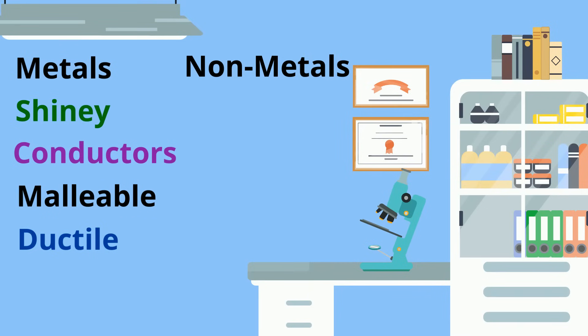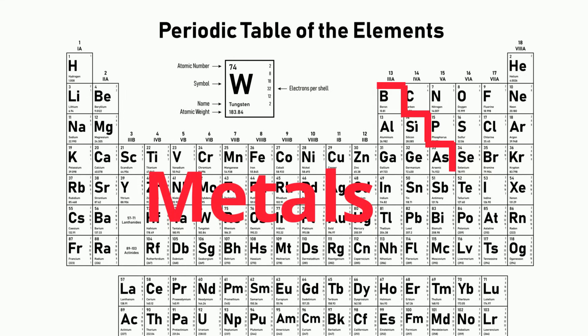Non-metals are the opposite. They are dull, insulators, and brittle. Non-metals are elements that are usually gases or brittle solids at room temperature. Most can form ionic and covalent compounds and are located to the right of the zigzag staircase.